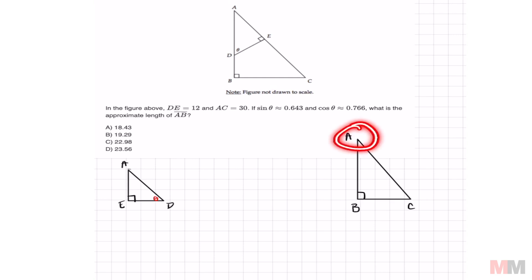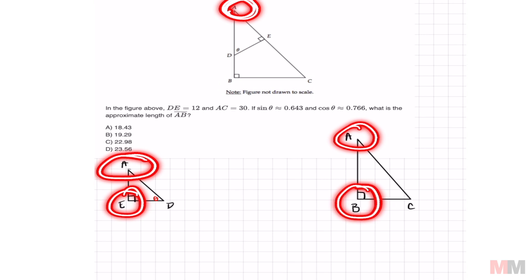So notice that there are two angles that they have in common with one another and that's shared right here and they also have two 90 degrees that are in common.